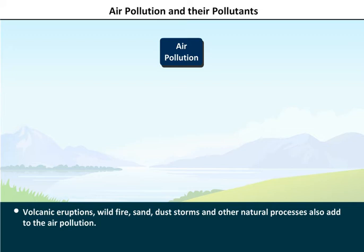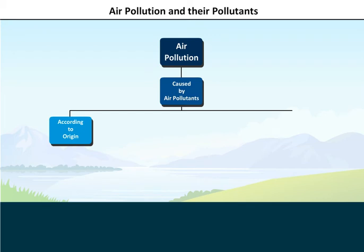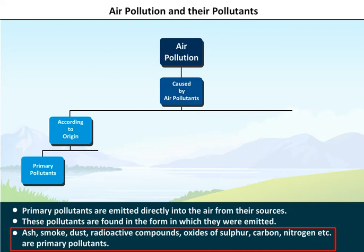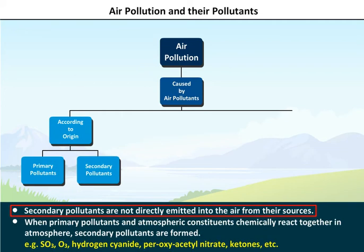Air pollutants are classified according to origin. Primary pollutants are emitted directly into the air from their sources and are found in the form in which they were emitted. Ash, smoke, dust, radioactive compounds, and oxides of sulfur, carbon, and nitrogen are examples of primary pollutants.